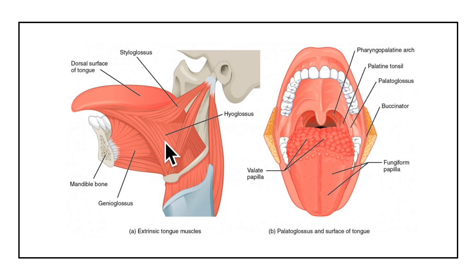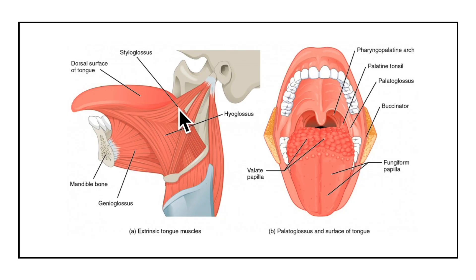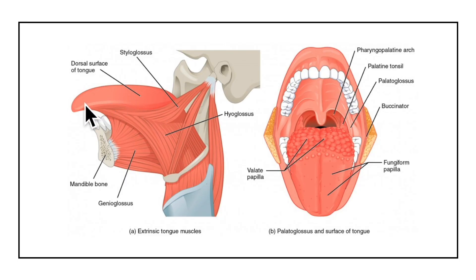The hyoglossus originates from the whole length of the greater cornu and lateral part of the hyoid bone. It inserts into the side of the tongue between the styloglossus muscle and the inferior longitudinal muscle. Its action is to depress the tongue, make the dorsum convex, and retract the protruded tongue.